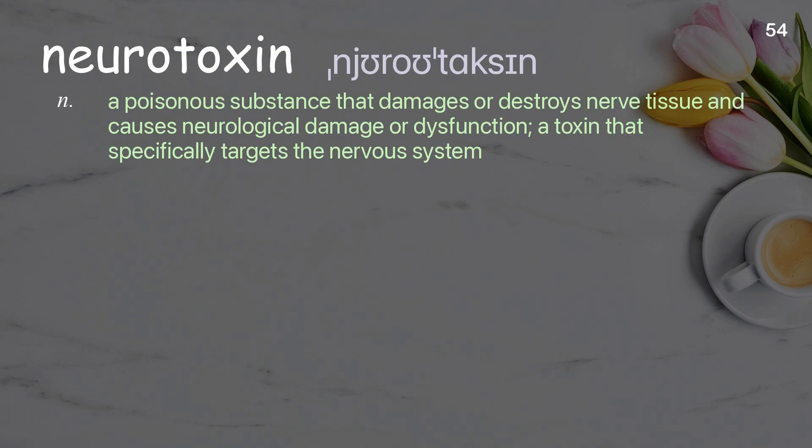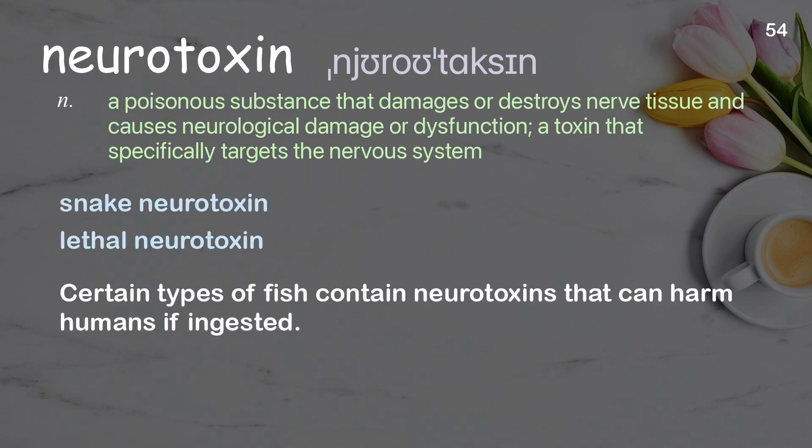Neurotoxin: a poisonous substance that damages or destroys nerve tissue and causes neurological damage or dysfunction; a toxin that specifically targets the nervous system. Examples: snake neurotoxin, lethal neurotoxin. Certain types of fish contain neurotoxins that can harm humans if ingested.